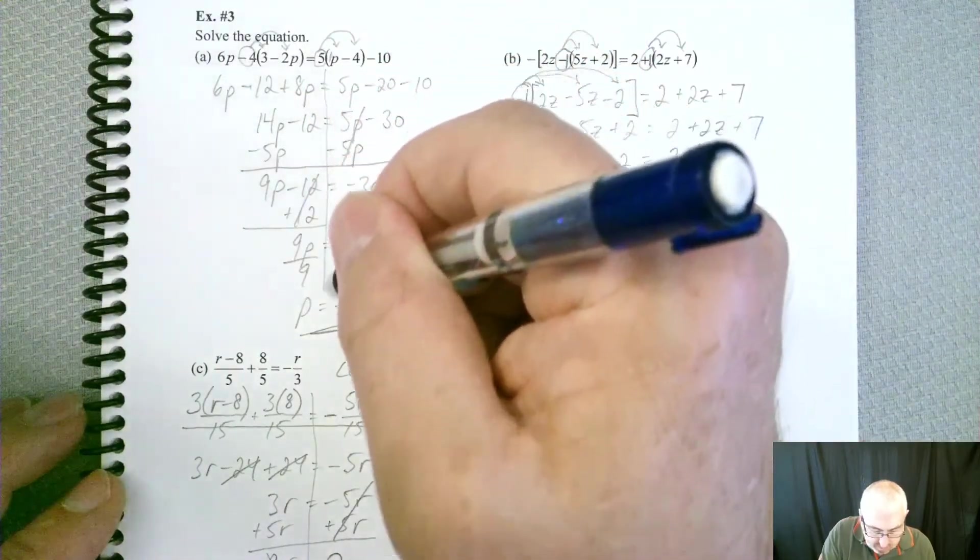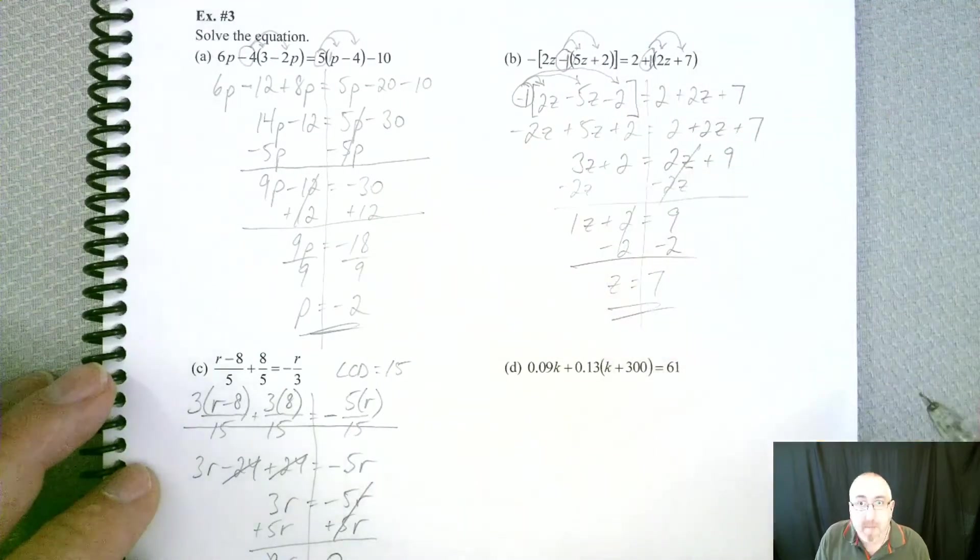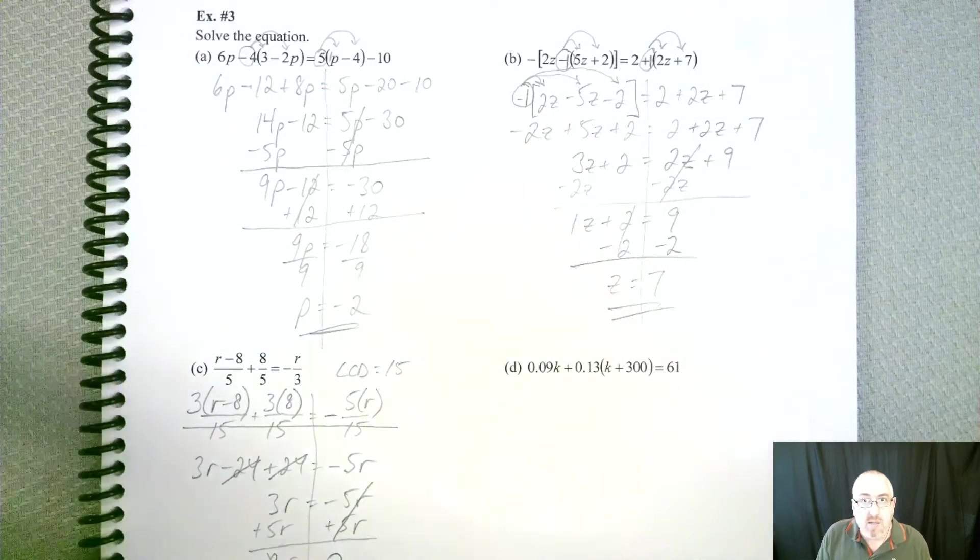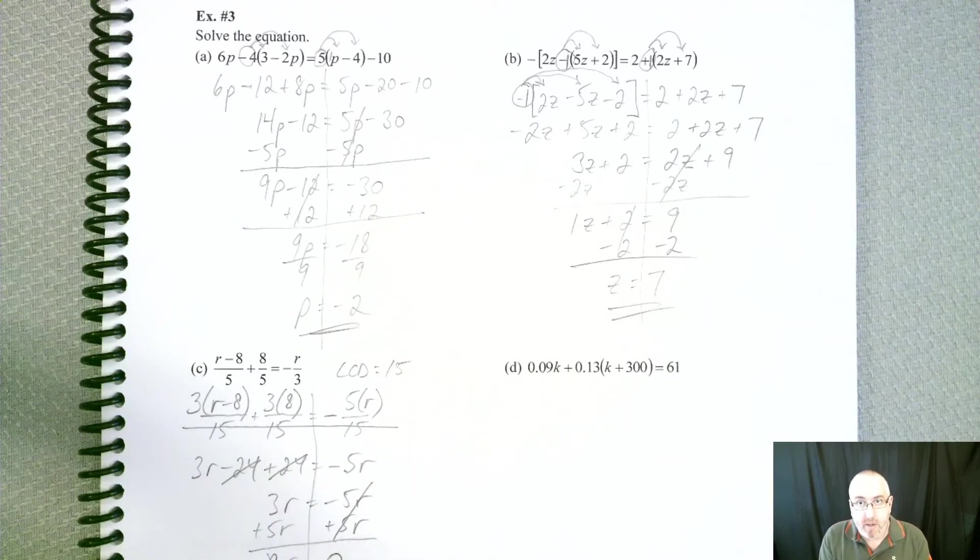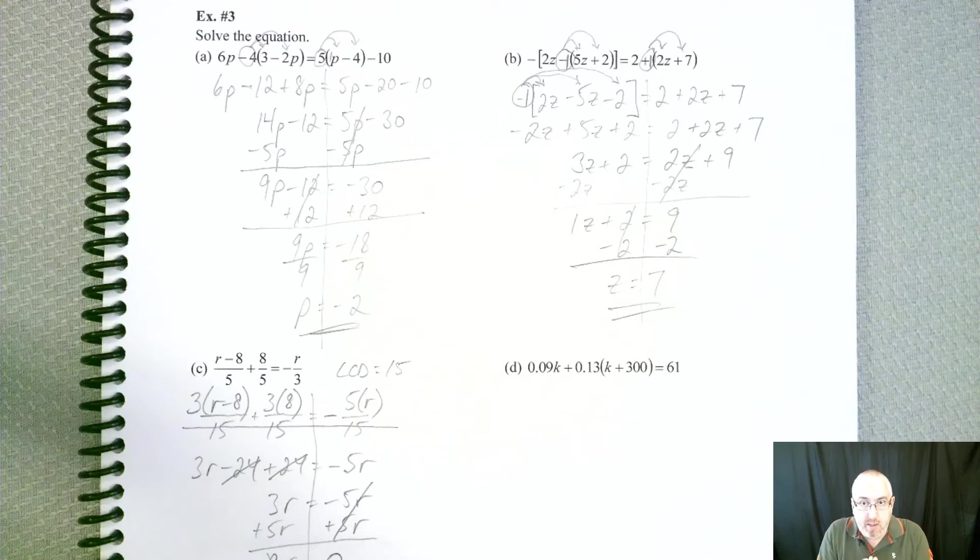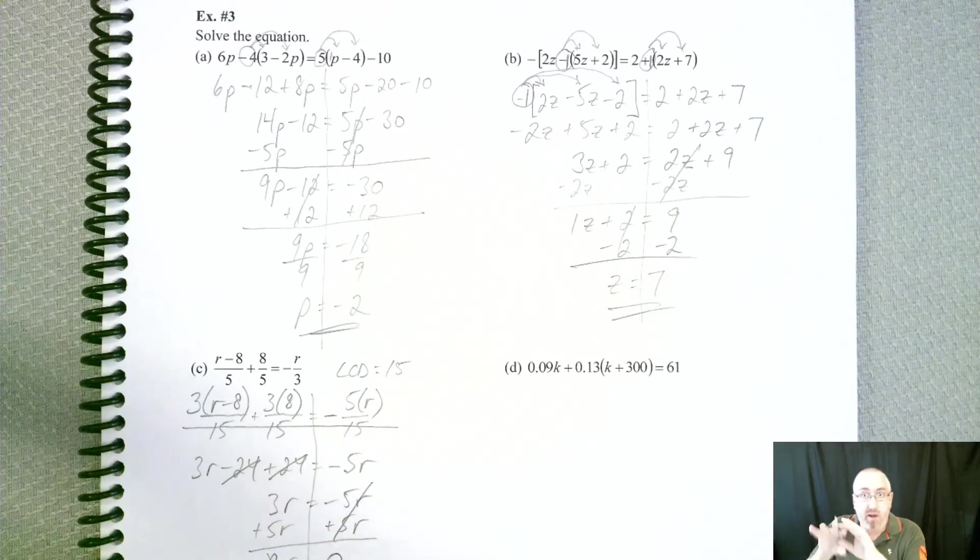That equal sign falls right on that line. So that's the thing. Your equal sign shouldn't be moving around anywhere. You know, it should try to keep it right smack dab in the middle and just keep simplifying on both sides until you start to move stuff around.